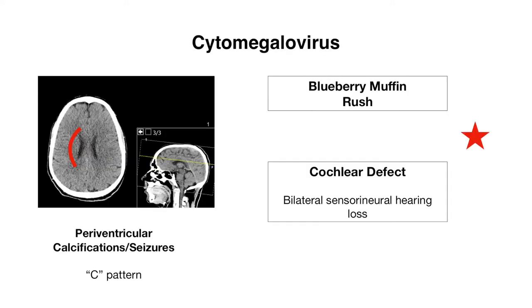Let's now move on to our third infection, cytomegalovirus, which is actually the most common congenital viral infection. Unlike toxoplasmosis, where calcifications are diffuse, in CMV the calcifications are periventricular — surrounding the ventricles — and you can remember this as a C pattern, consistent with the C in cytomegalovirus. There is also a red star here, as babies can have a blueberry muffin rash and cochlear defects leading to bilateral sensorineural hearing loss. With congenital CMV, sensorineural hearing loss is the most common sequela.